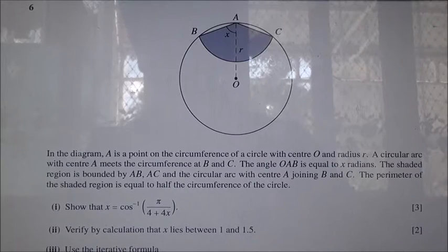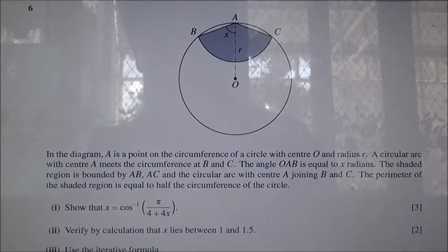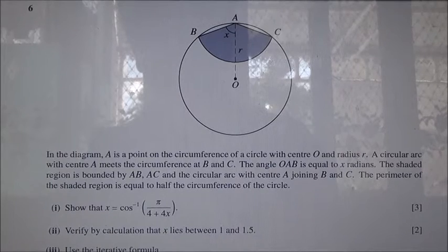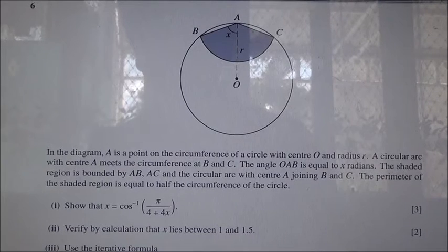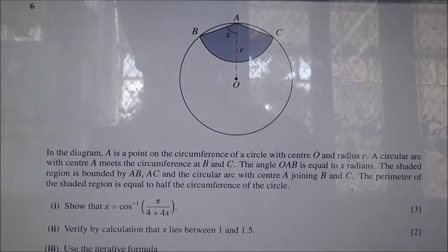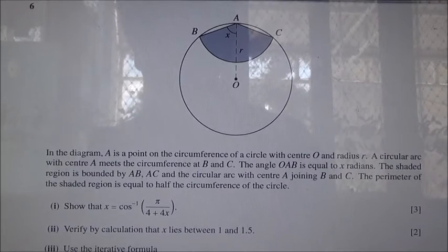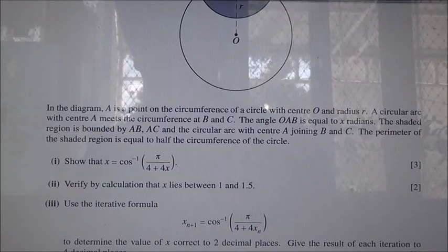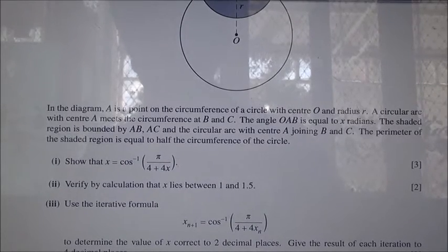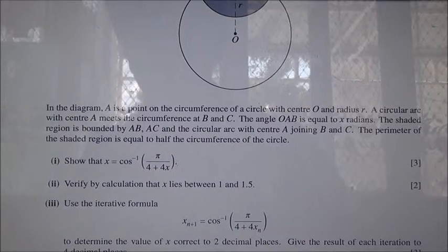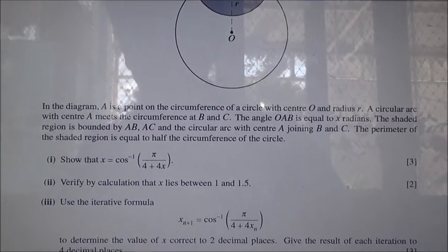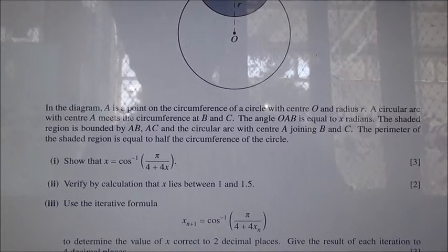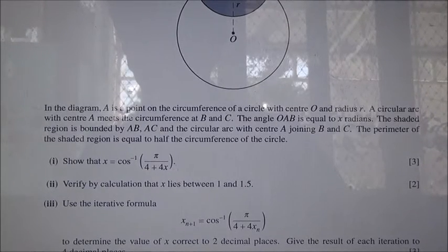For the first part, we need to show that X is equal to the inverse cosine of pi upon 4 plus 4X. For the second part, we need to verify by calculation that X lies between 1 and 1.5. For the third part, we have to use the iterative formula X sub n+1 equals the inverse cosine of pi upon 4 plus 4X sub n, to determine the value of X correct to 2 decimal places, giving the result of each iteration to 4 decimal places.